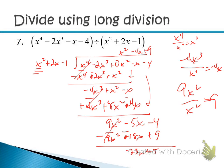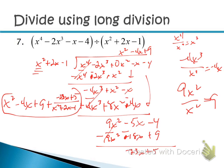Write out the solution: x² − 4x + 9 plus the remainder (−23x + 5) over (x² + 2x − 1). That's the answer to this long division problem.